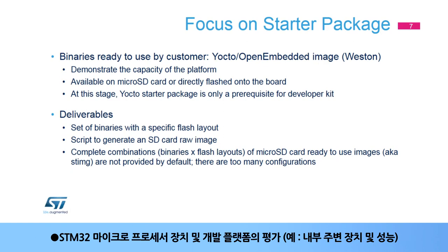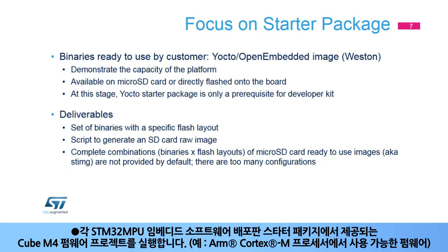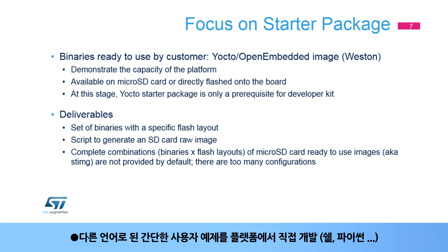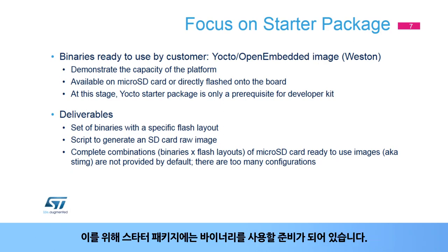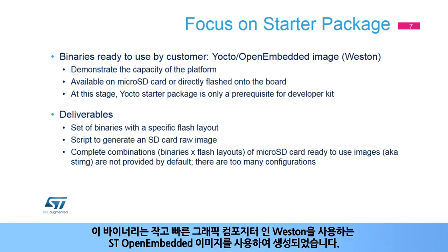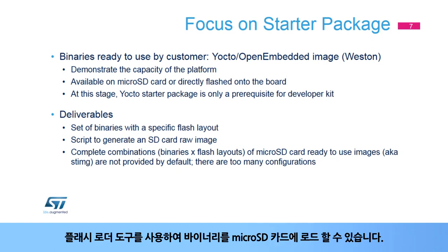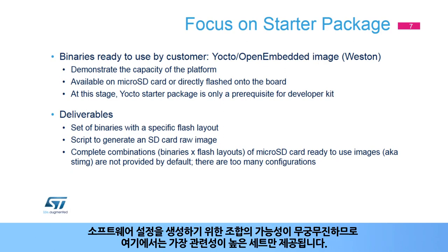The software image contains firmware delivered as examples with regards to the STM32Cube MPU package, if the considered development platform includes an ARM Cortex-M processor. Main use cases covered by this package include: evaluation of the STM32 microprocessor device and development platform; execution of the Cube M4 firmware projects; direct development of simple user examples in different languages such as shell, Python, etc. The starter package contains ready-to-use binaries generated using an ST OpenEmbedded image that uses Weston, a minimal and fast graphical compositor. Binaries can be loaded onto a microSD card using the Flash Loader tool, or a custom microSD card content can be generated from a script.